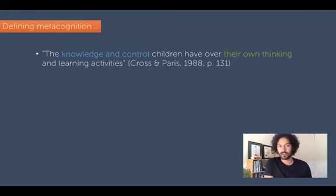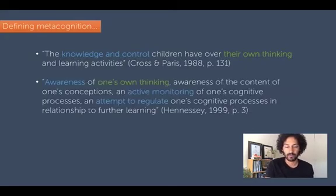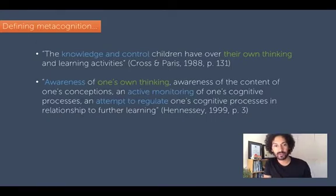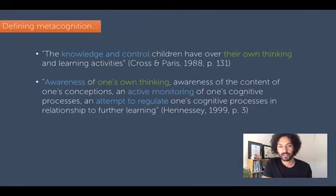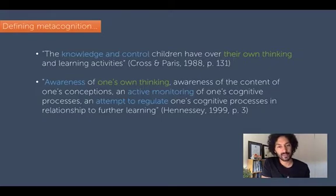The first definition is: the knowledge and control children have over their own thinking and learning activities. So knowledge and control — that's important to keep in mind. The next definition is: awareness of one's own thinking, awareness of the content of one's conceptions, and active monitoring of one's cognitive processes, and an attempt to regulate one's cognitive processes in relationship to further learning. Key words here are awareness — this idea of self-awareness — and active monitoring and attempt to regulate.